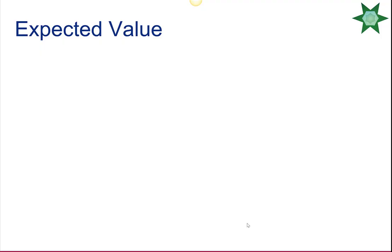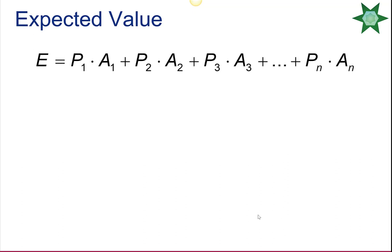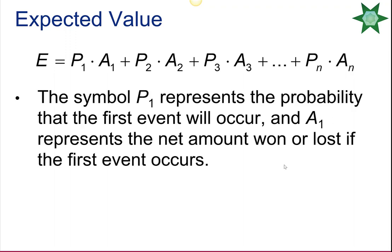Expected value, or expectation, is often used to determine the expected results of an experiment or business venture over the long term. To calculate it, we take each outcome, multiply it by the probability of it occurring, and then add those products together for all possible outcomes.